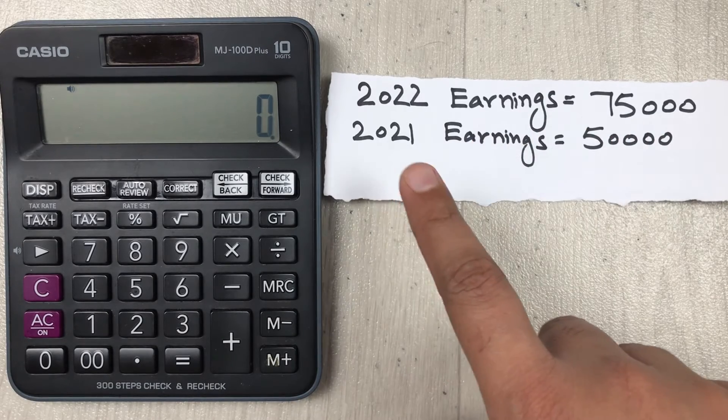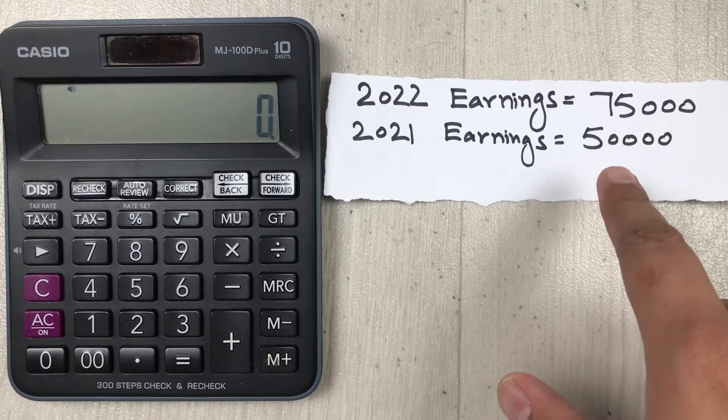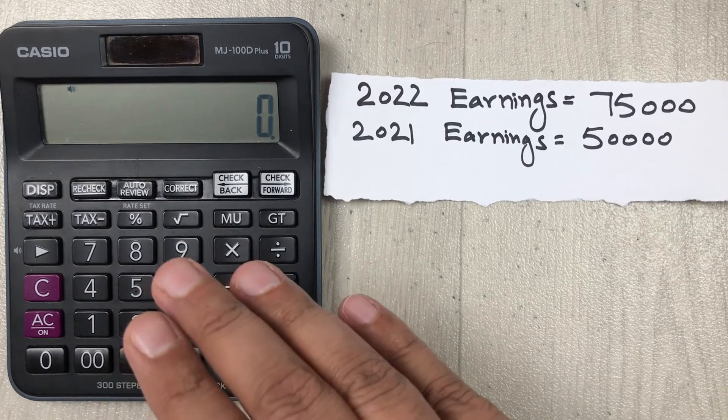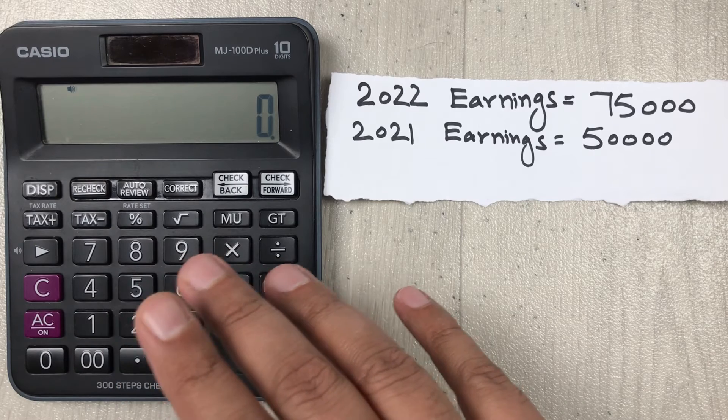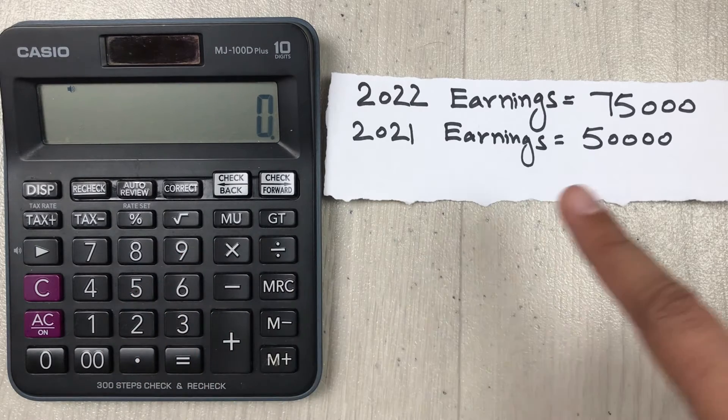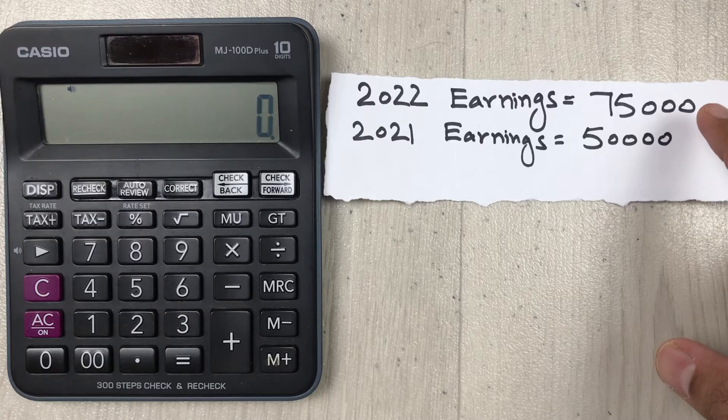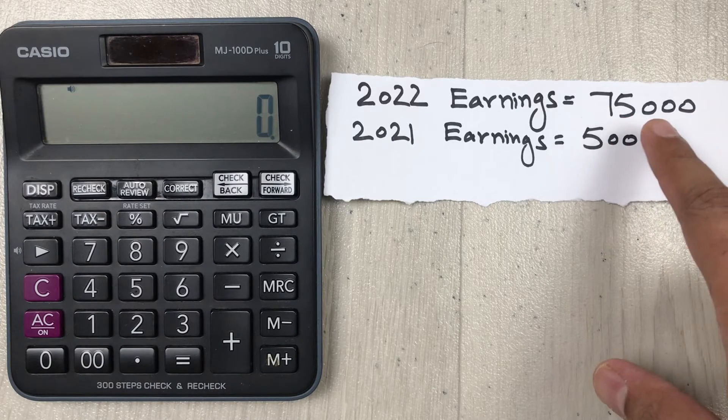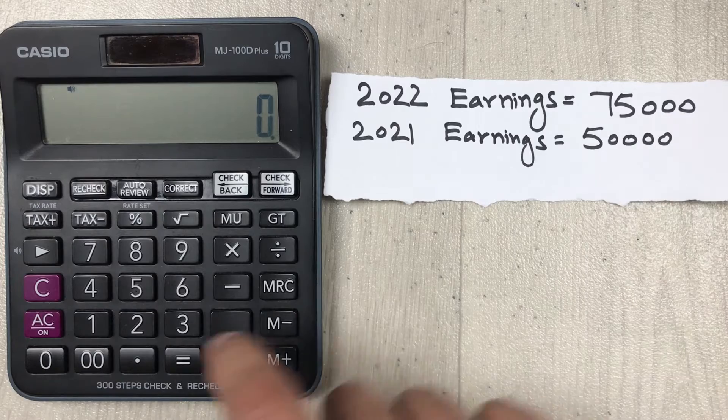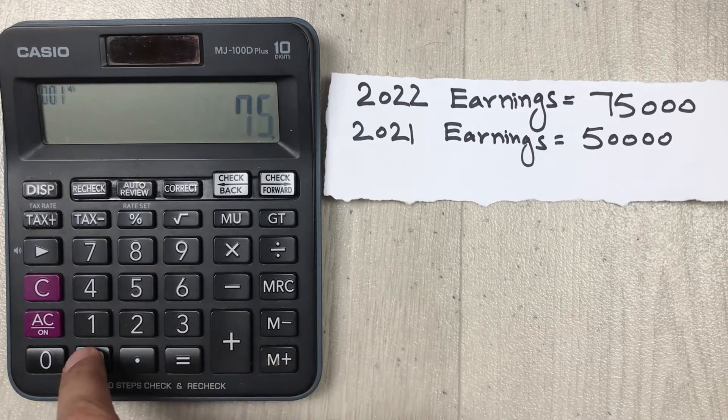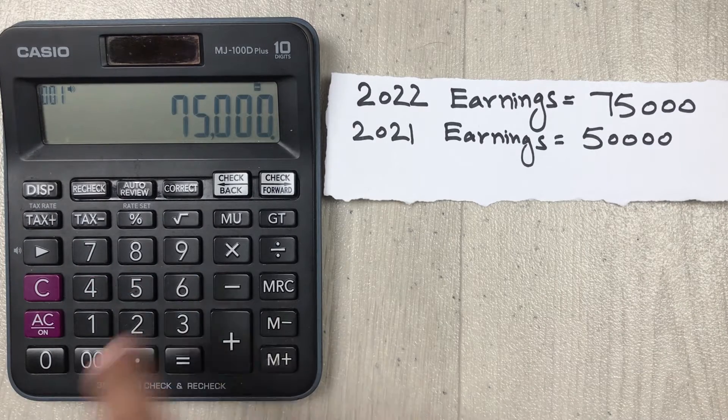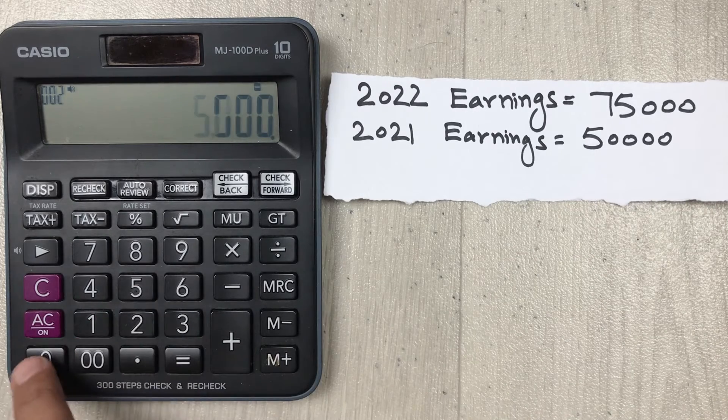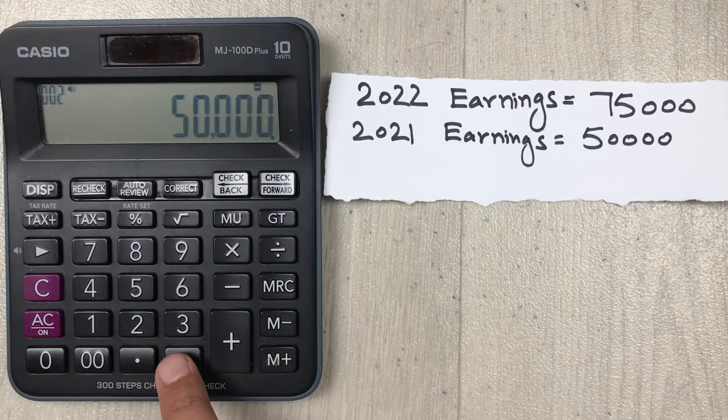We will do this in a three-step process. In the first step, we subtract the current year earnings with the previous year earnings. So our current year earnings are 75,000, so we type here 75,000 minus 50,000, and then we press the equal button.